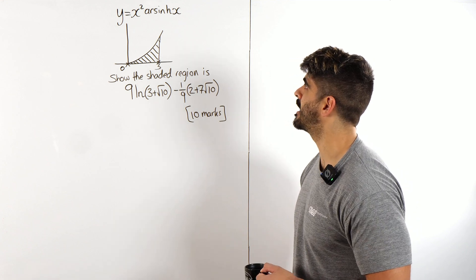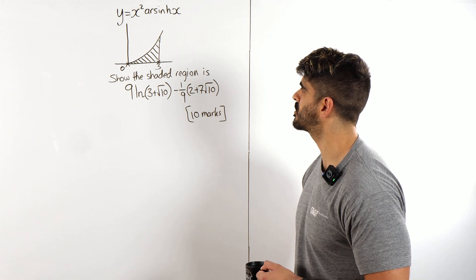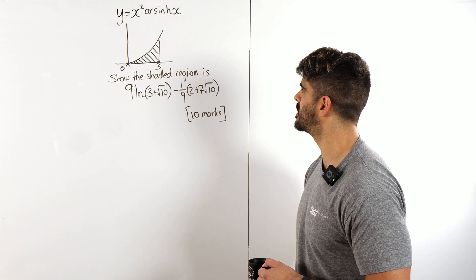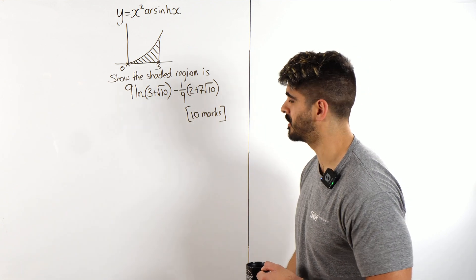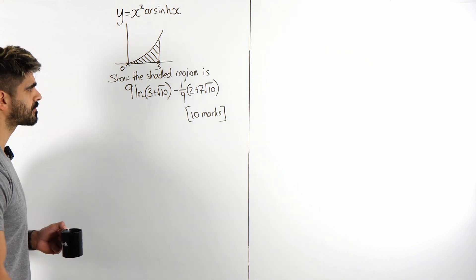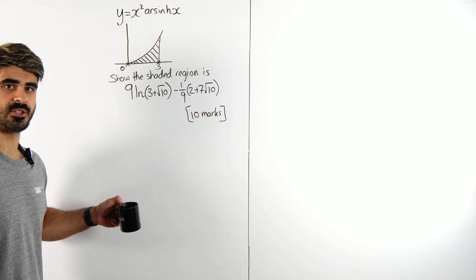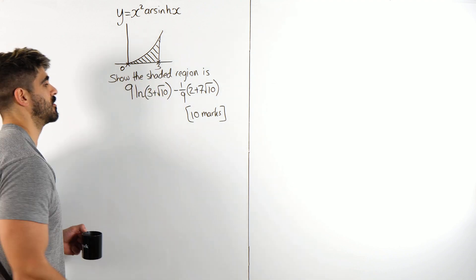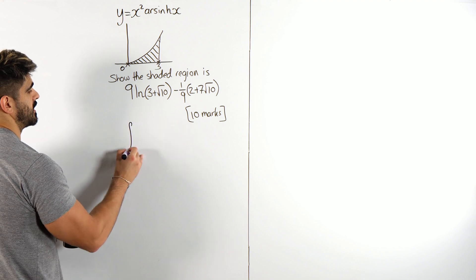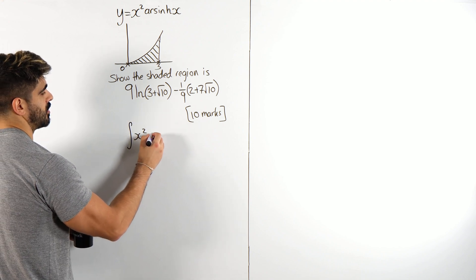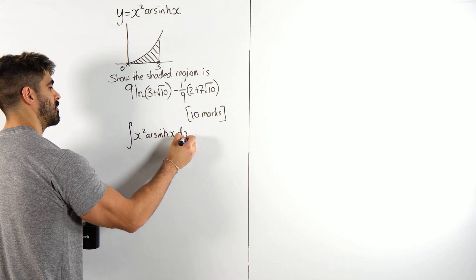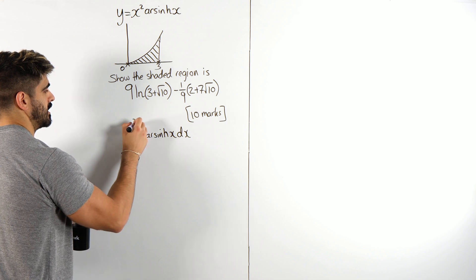It says Y equals X squared arshine X. We have this diagram there, show the shaded region is this absolutely stunning expression with the Lungang involved. So essentially what we're doing is we're just integrating between 0 and 3, right? So from here, we are deciding, alright, how do we even integrate X squared arshine X with respect to X between 0 and 3.